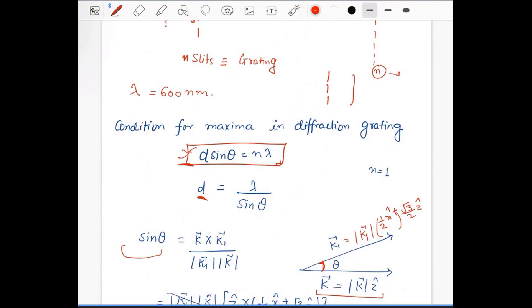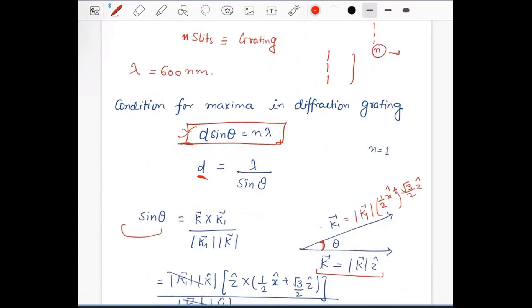Sine theta can be calculated as k⃗ × k⃗1. This is just the right-hand rule. Once you know two vectors k and k1, you can calculate sin θ by taking their cross product and dividing by their magnitudes.